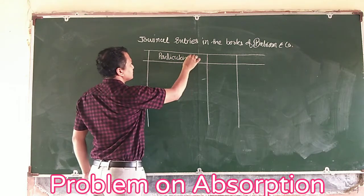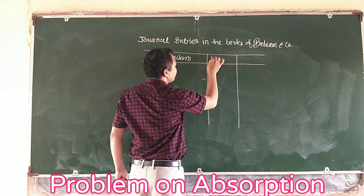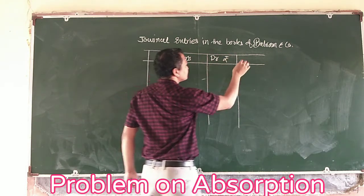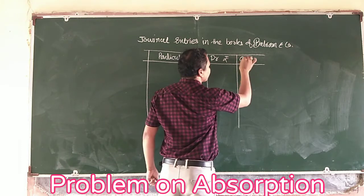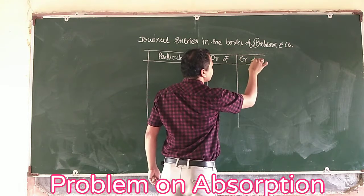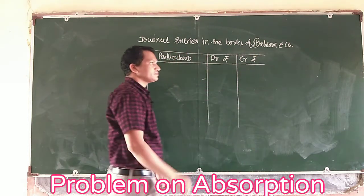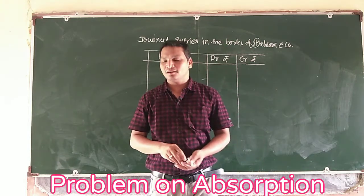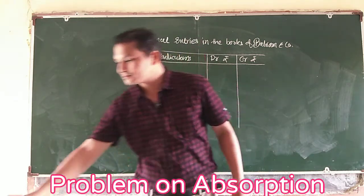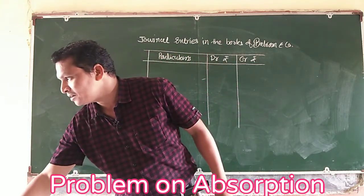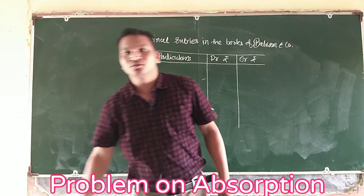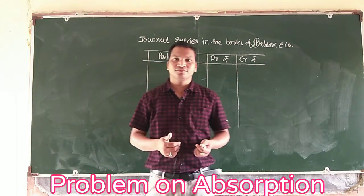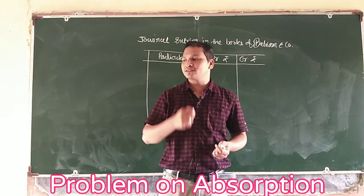The journal entry format includes: Particulars, Debit Amount, and Credit Amount. The company is doing its business on a daily basis — recording their transactions daily.